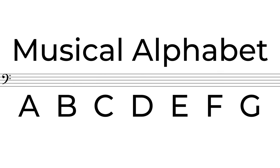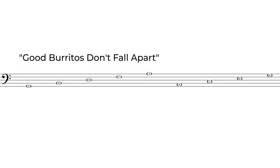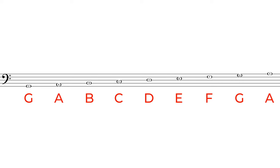To wrap this video up, let's review from the beginning. Our staff is made up of five lines and four spaces, and the musical alphabet contains the letters A through G. When there is a bass clef on the staff, we use the phrase 'Good burritos don't fall apart' to identify the notes on the lines, and we use the phrase 'All cows eat grass' to identify the notes in the spaces. The notes move forward alphabetically going up the staff and in reverse alphabetically going down the staff.